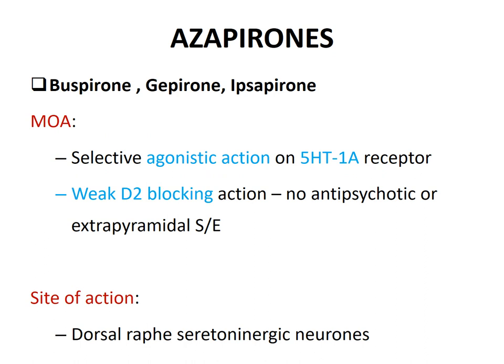The second group of anti-anxiety drugs is azapirones. In this group we have buspirone, gepirone, and ipsapirone. The major mechanism of action of this drug is selective agonistic action on the 5-hydroxytryptamine 1A (5-HT1A) receptor. In addition to that, it has a weak D2 receptor blocking action. However, this dopamine D2 receptor blocking does not give them additional anti-psychotic properties, nor do they produce any extrapyramidal side effects. The major site of action is the dorsal raphe serotonergic neurons.